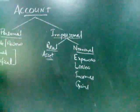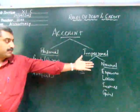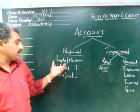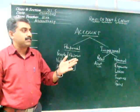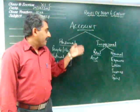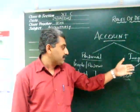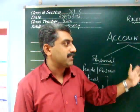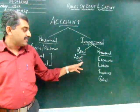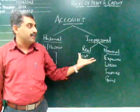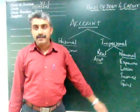To summarize: accounts can be divided into two types — personal and impersonal. Personal account deals with people or persons; they can be natural persons such as human beings, or artificial persons created by law. Impersonal accounts are divided into two: real and nominal. Real account deals with assets, and nominal account deals with expenses, losses, incomes, and gains.